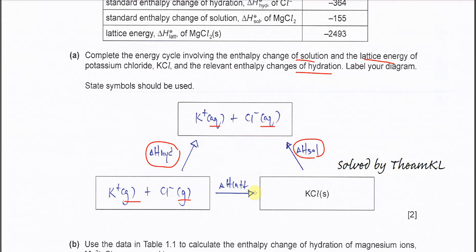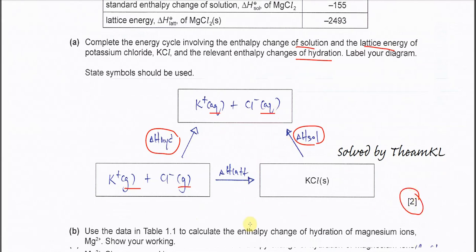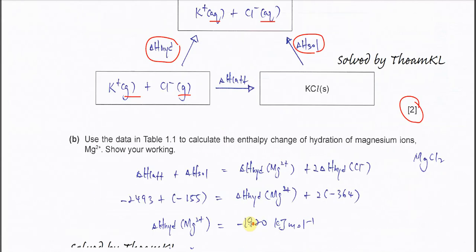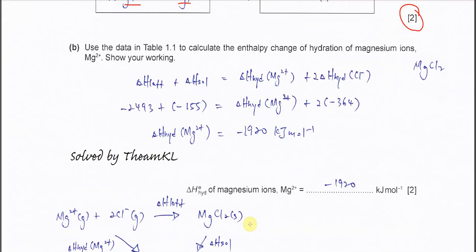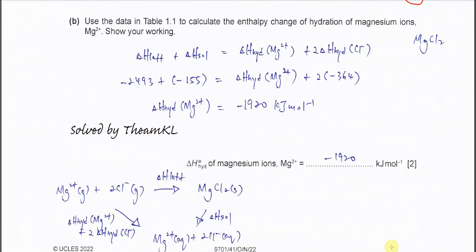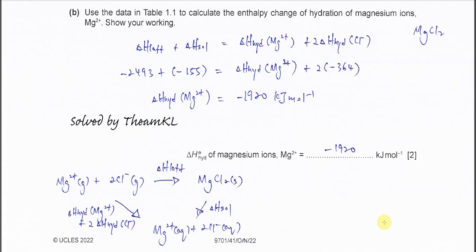You must label the gaseous ions and the aqueous solution. Complete the cycle and you get the two marks. Part B: use the data in Table 1.1 to calculate the enthalpy change of hydration of the magnesium ion.